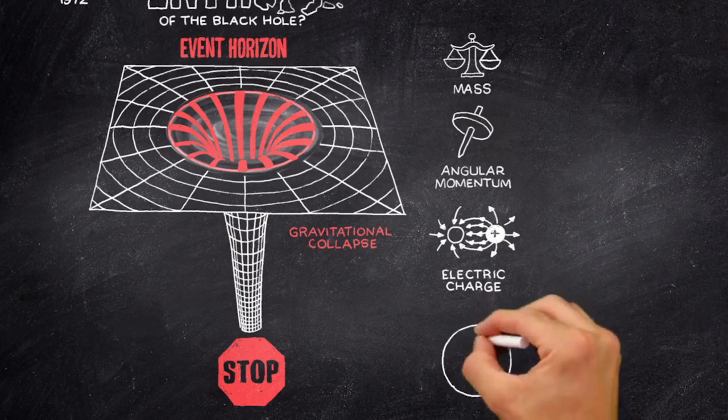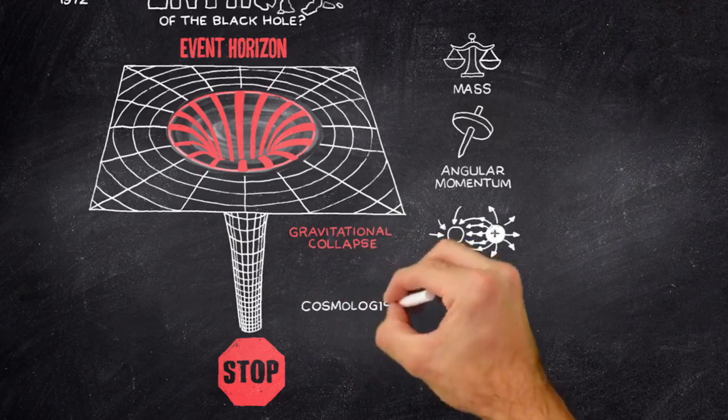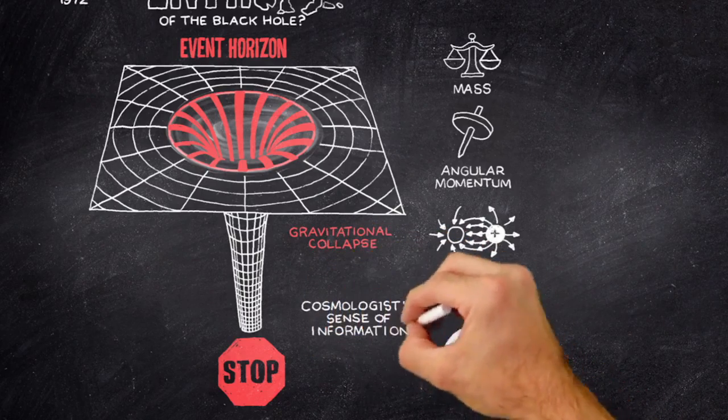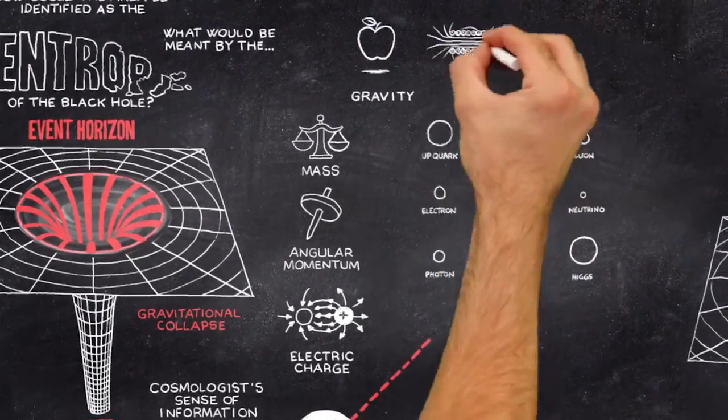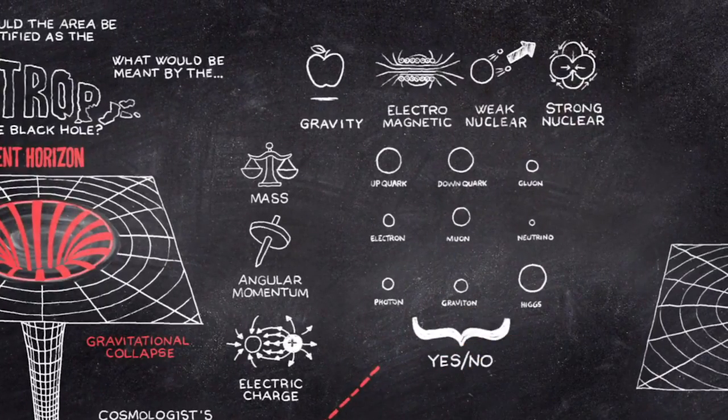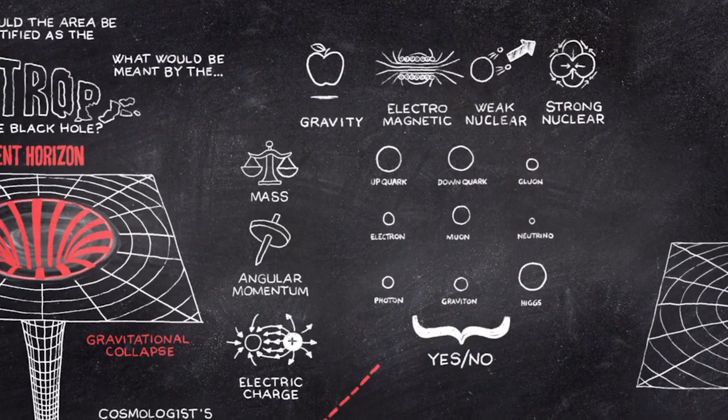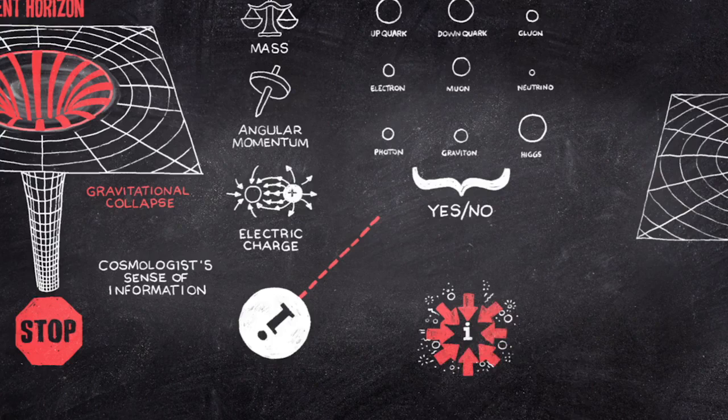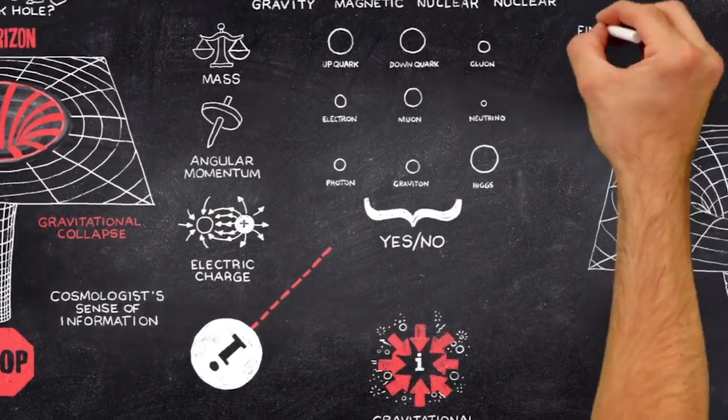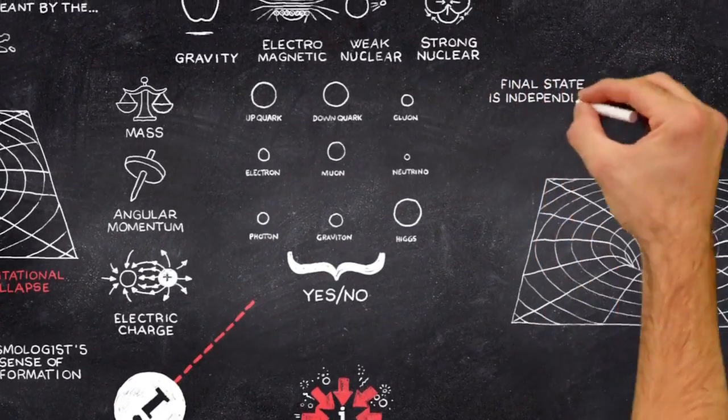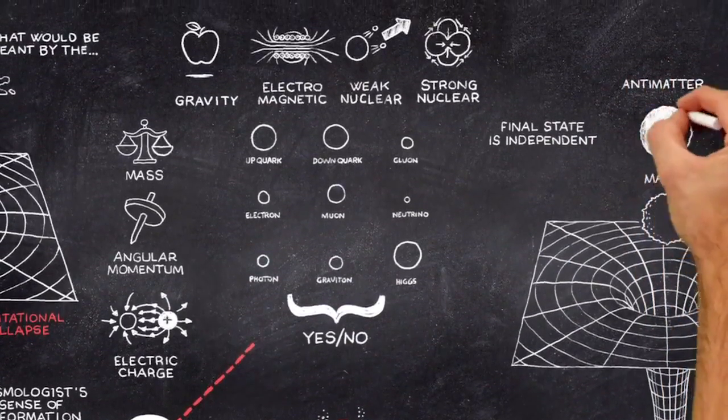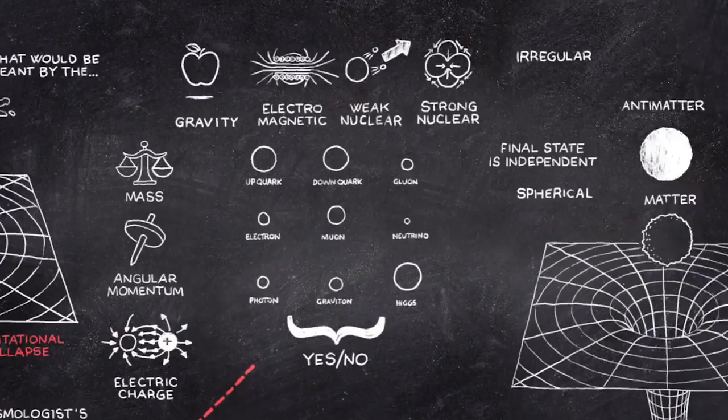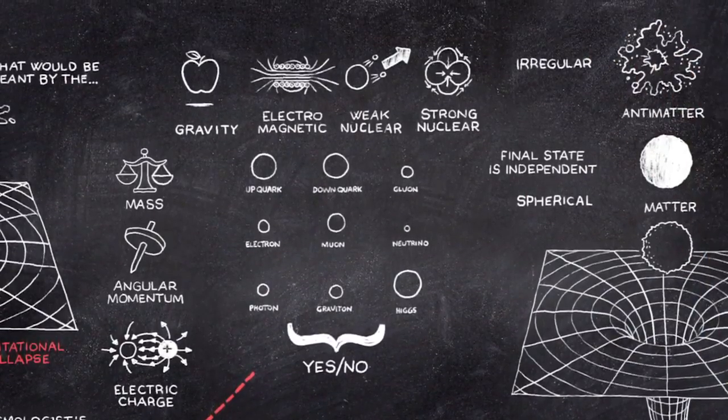This theorem has implications for information. In the cosmologists' sense of information, the idea that every particle and every force in the universe has an implicit answer to a yes-no question. The theorem implies that a large amount of information is lost in a gravitational collapse. In other words, the final black hole state is independent of whether the body that collapsed was composed of matter or antimatter, or whether it was spherical or highly irregular in shape.